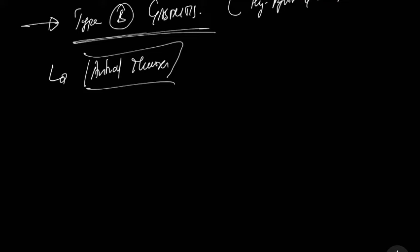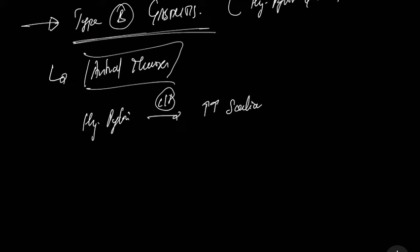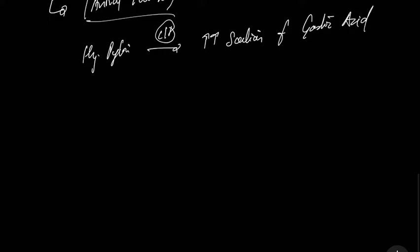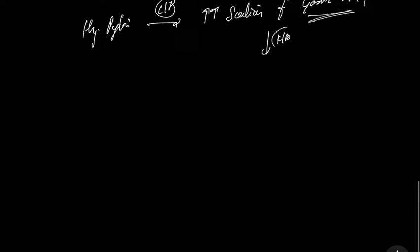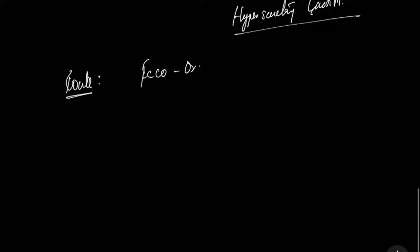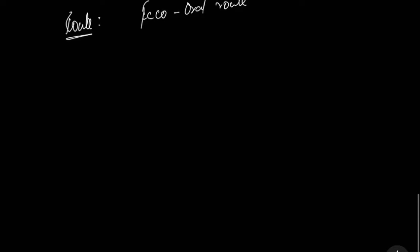H. pylori gastritis mainly involves the region of your antral mucosa. What happens here is that the H. pylori infection leads to an increase in secretion of gastric acid, which is HCl. This condition is known as hyper-secretion gastritis, and it usually follows a fecal-oral route.